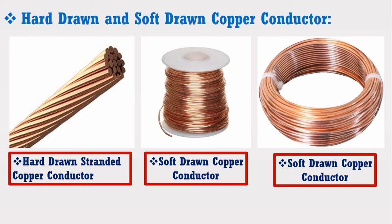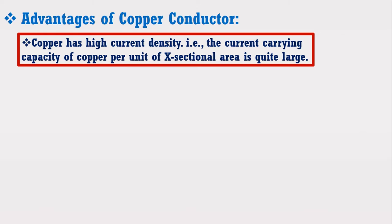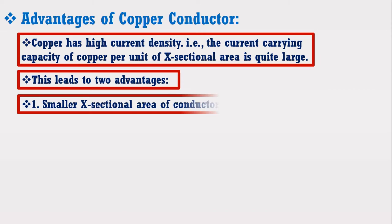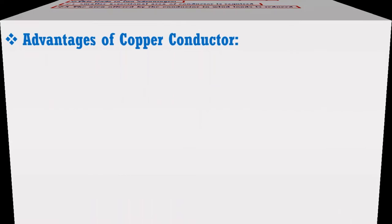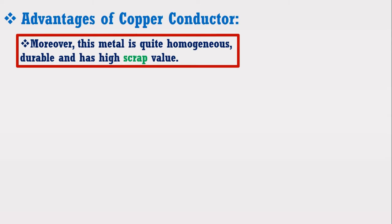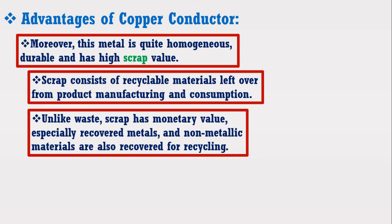The figure shows the hard drawn and soft drawn copper conductor materials. The advantages of copper conductor include: high current density, meaning the current carrying capacity of copper per unit of cross-sectional area is quite large. This leads to two advantages: 1. A smaller cross-sectional area of conductor is required, and 2. The area offered by the conductor to wind loads is reduced. Moreover, this metal is quite homogeneous, durable, and has high scrap value. Scrap consists of recyclable materials left over from product manufacturing, and unlike waste, scrap has monetary value.